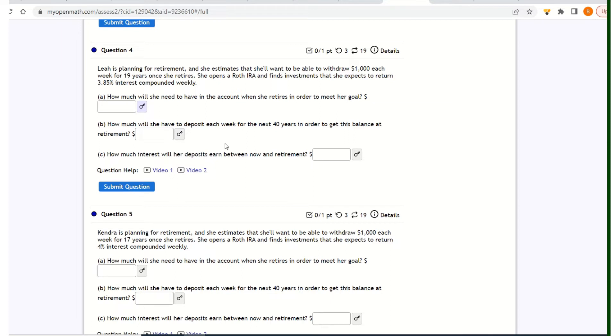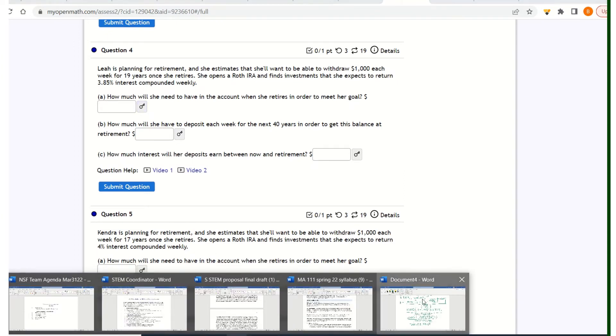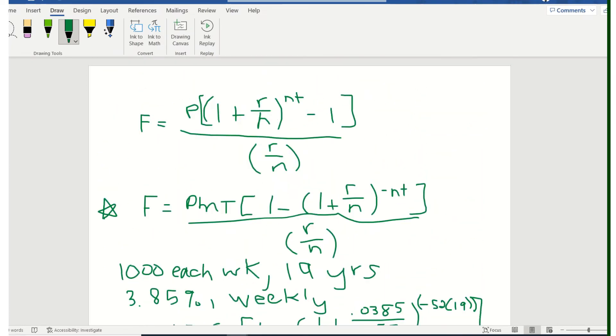Now, how much will she have to deposit each week for the next 40 years in order to get this balance at retirement? So now we're going to use another formula because she's going to start saving money up. And we want to know how much is she going to have to save for the next 40 years each week.